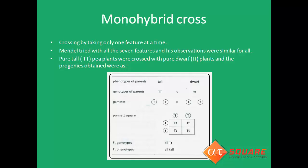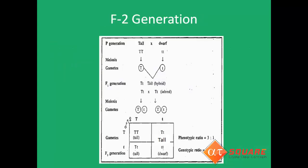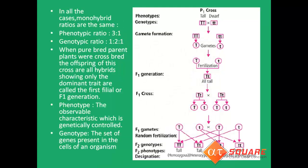On selfing, we get the F2 generation. The gametes produced are T and t, and again T and t. On plotting a Punnett square, the phenotypic ratio obtained is 3:1 — that is, 3 tall and 1 dwarf. The genotypic ratio is 1:2:1 — that is, 1 homozygous tall (TT), 2 heterozygous tall (Tt), and 1 homozygous dwarf (tt). This picture summarizes the F1 and F2 generations obtained in a monohybrid cross. When purebred plants were crossbred, the offspring are all hybrids showing only the dominant traits, called the first filial or F1 generation.